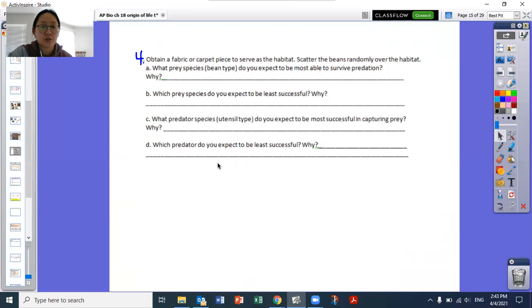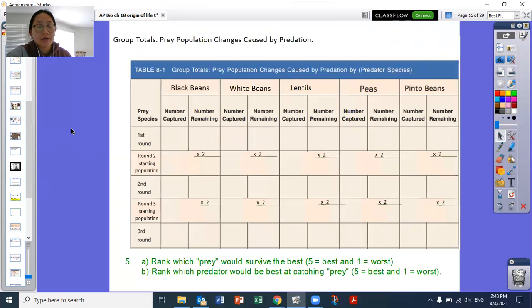D is which predator do you expect to be the least successful and why? So again, this could be based on your skill, but I would like it to be based on the shape of the utensil on how you answer this question.